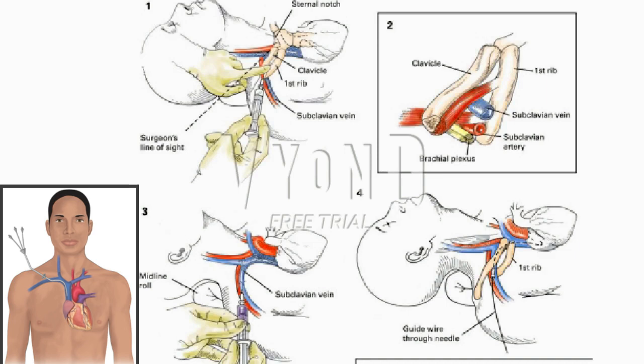Ultrasound is used to confirm the patency of the vein and its location. The same modified Seldinger technique is used as described. The patient is placed in a supine position. A rolled towel or sheet is placed in the interscapular area to allow the shoulder to drop away from the infraclavicular site. The patient is placed in a 20-degree Trendelenburg position, head down, to minimize the risk of air embolism and increase the size of the vein. The head is turned slightly to the opposite side.